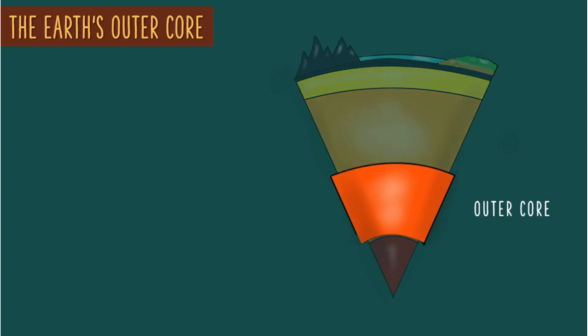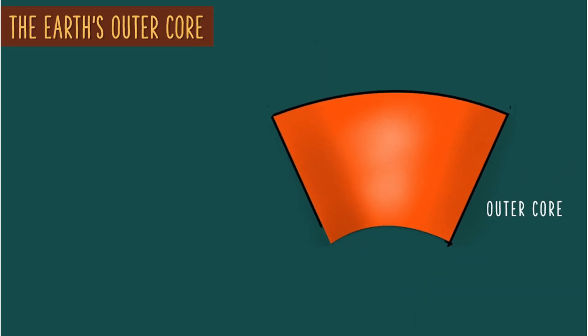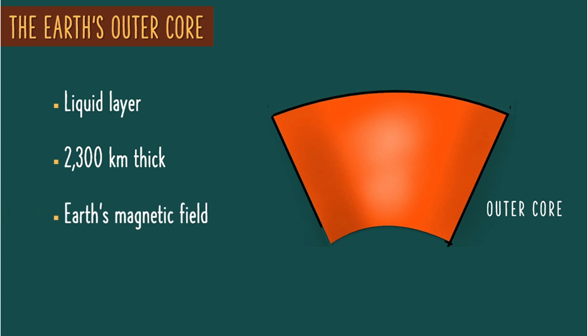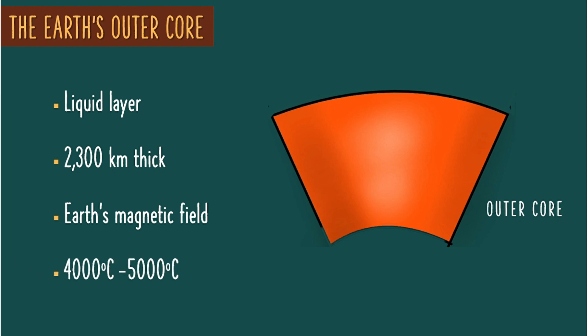The outer core is the only liquid layer, which is 2,300 kilometers thick. It is composed of liquid iron and nickel. It is responsible for the Earth's magnetic field. Its average temperature is 4,000 degrees Celsius to 5,000 degrees Celsius.